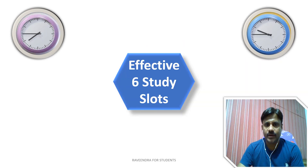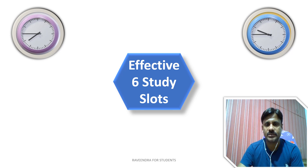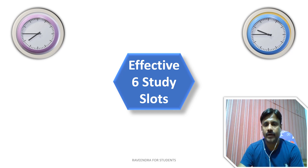So in this effective time management plan, 6 study slots have been suggested. You don't have to follow this exactly — you can make adjustments. One-and-a-half-hour sessions can be converted to 2-hour sessions or vice versa, according to your convenience. The key suggestion is to manage your time so you utilize the full 24 hours per day effectively.